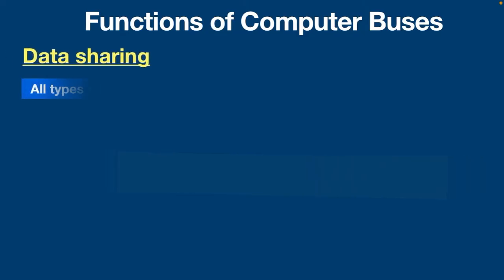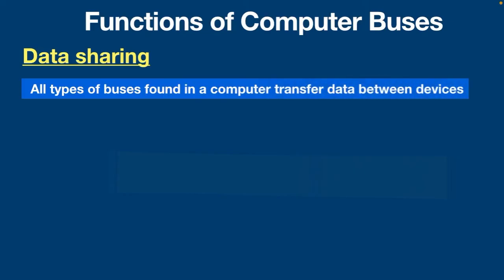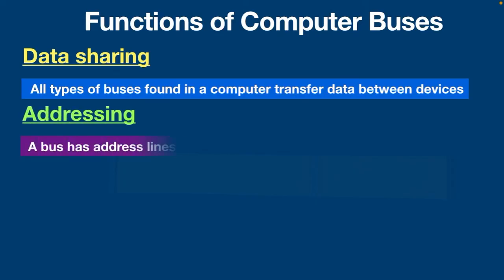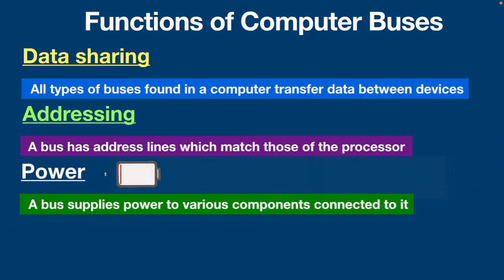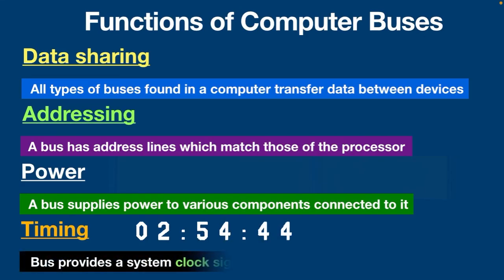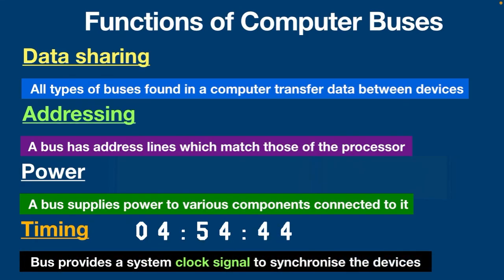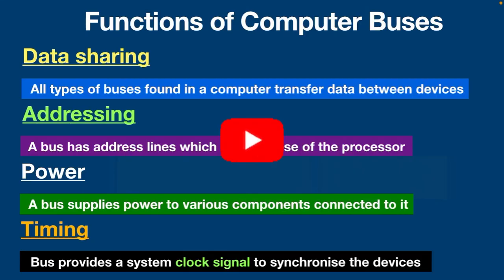There are some important functions performed by computer buses. Data sharing — all types of buses transfer data between devices connected to them. Addressing — a bus has address lines which allow data to be sent to or from specific memory locations. Power — a bus supplies power to various components connected to it. Timing — the bus provides a system clock signal to synchronize the devices attached to it with the rest of the system. That wraps up today's video. Thanks for watching — please hit the subscribe button.